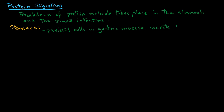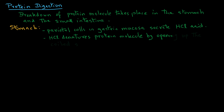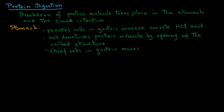The parietal cells in the gastric mucosa secrete hydrochloric acid. The protein molecule is denatured by the hydrochloric acid, as the acid opens up the coiled structure of the molecule. There are also chief cells present in the gastric mucosa.